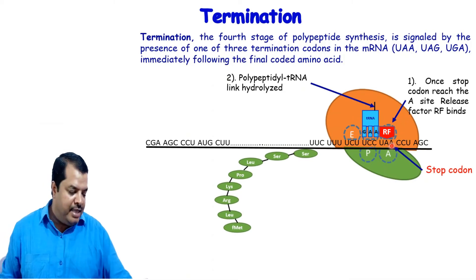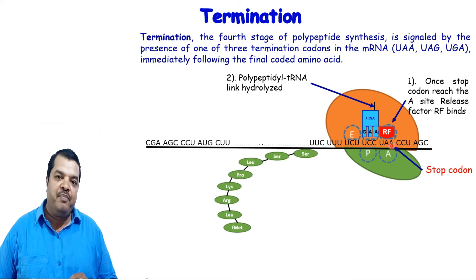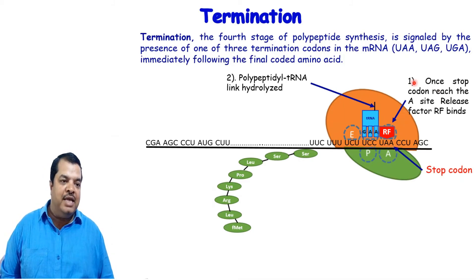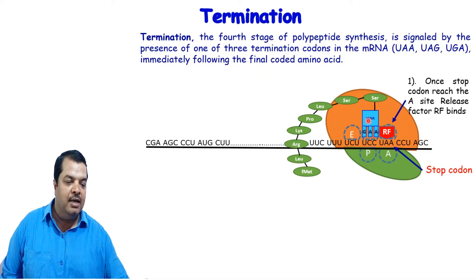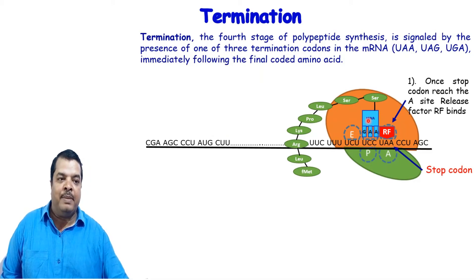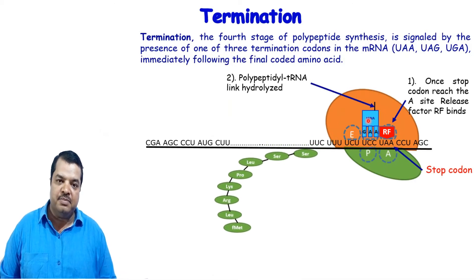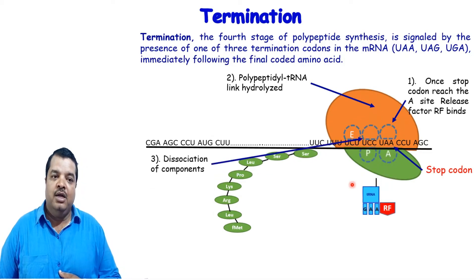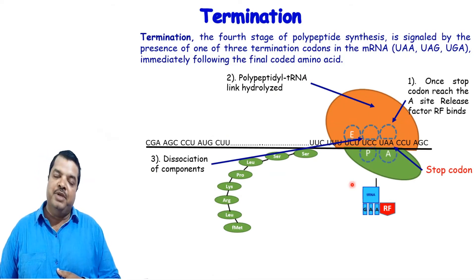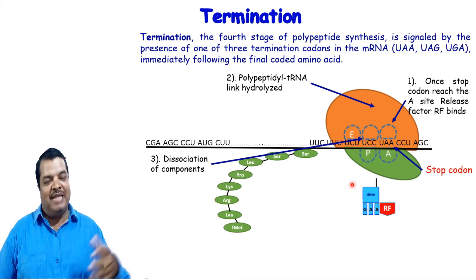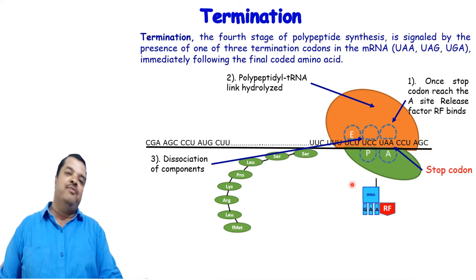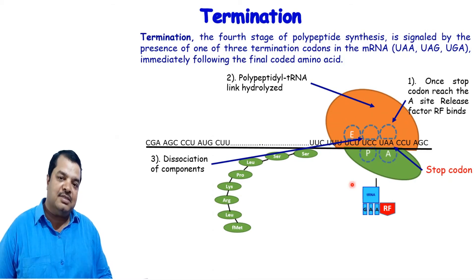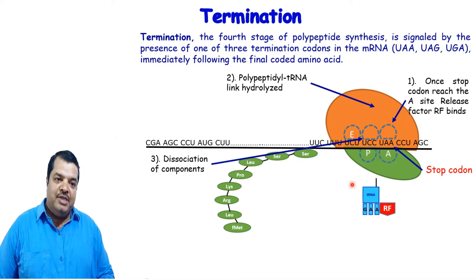The second step: the polypeptide-tRNA linkage is hydrolyzed. The link between the polypeptide and tRNA is cleaved, and the polypeptide separates from the tRNA. The third step: dissociation of components — the tRNA and release factor also dissociate from the ribosome. After this, the ribosome is free and can synthesize a new polypeptide again. These are the three major points of termination.